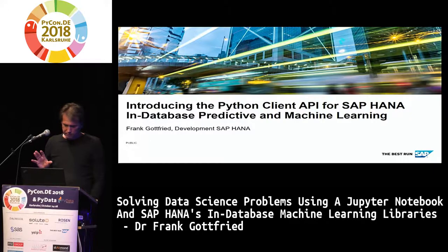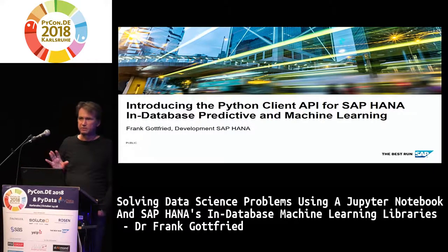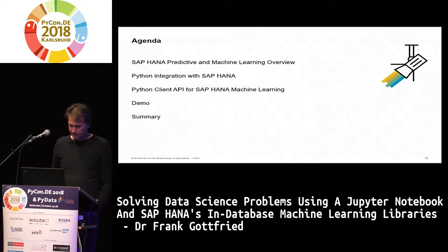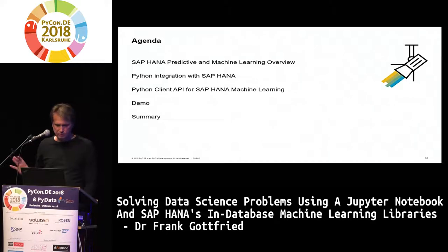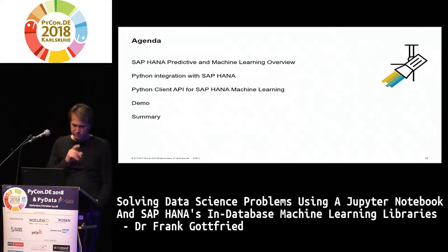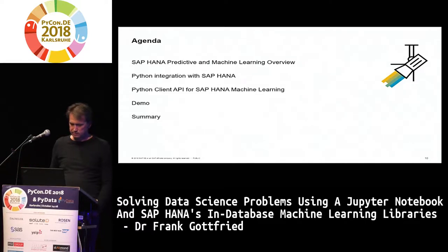I want to walk through a couple of slides to explain the architecture and the components involved, and then we'll go back to our data scientist and see how far they got. I'll explain shortly what the components are which we use to address that problem. I'll briefly talk about the Python integration between the client and the SAP HANA database, and then in particular how the Python client API for our machine learning library is built and how it looks.